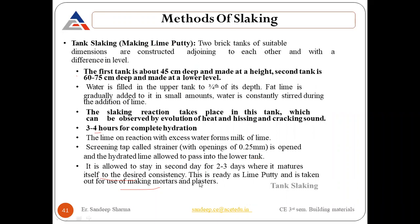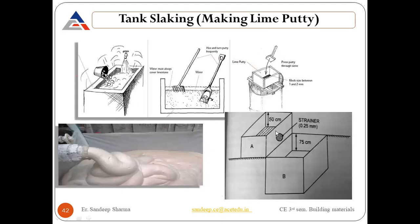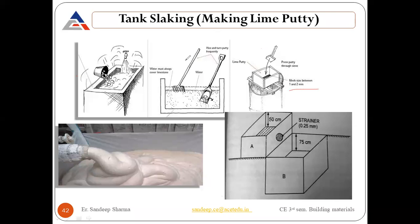After slaking, lime is now ready for construction purposes. Here you can see the two tanks — tank A and tank B — at different levels, with a 0.25 mm strainer for passing slaked lime from the first tank to the other. On one side water is added from the tap, and on the other side quicklime is added. The lime putti is passed through sieves with mesh size between 1 and 2 mm.